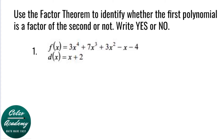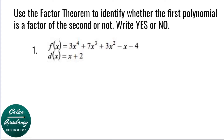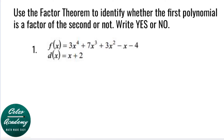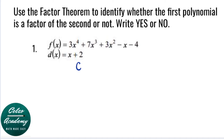Question number one. f of x is equal to 3x to the fourth plus 7x cubed plus 3x squared minus x minus 4, divided by d of x is equal to x plus 2. Our divisor here is x plus 2, so this means our c value is the opposite of plus 2, which is negative 2. To determine if x plus 2 is a factor, we need to evaluate f of c, which is f of negative 2. If the remainder is zero, this means x plus 2 is a factor.